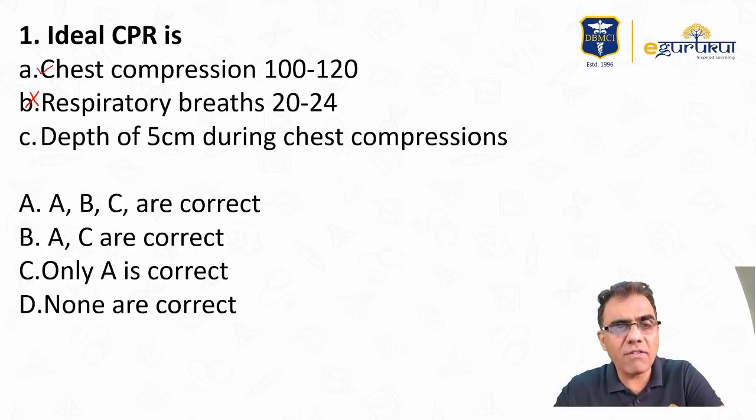So in this they have not mentioned pediatric CPR, so we are considering adult CPR. In adult CPR, respiratory rate is still 10 breaths per minute, means one breath every six seconds. And compression depth, yes, two inches equivalent to 5 cm. So A and C are correct.